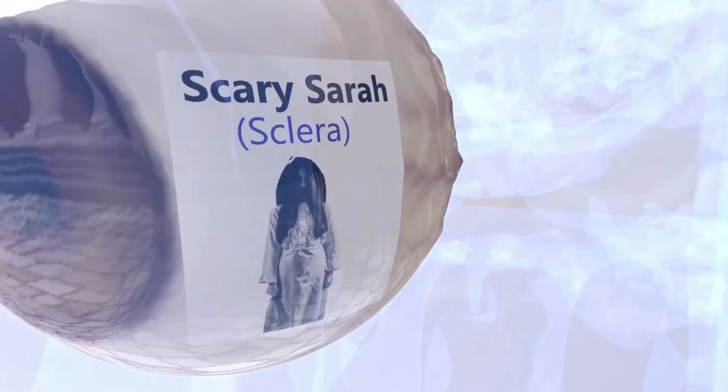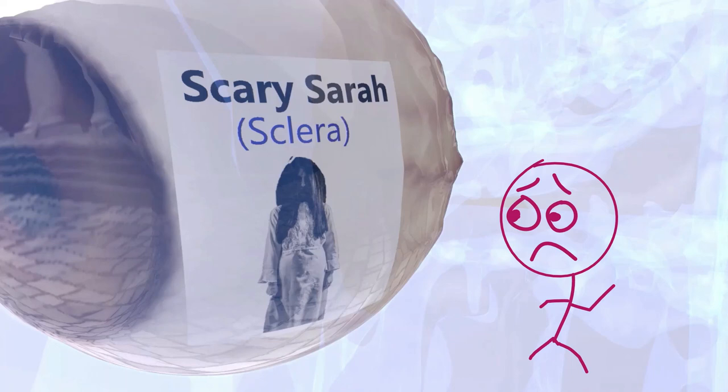The sclera is the outer supporting wall of the eyeball. If you want, you can imagine scary Sarah who we see over here. She is quite scary to remind us of sclera—scary Sarah for sclera.